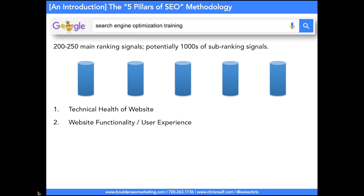Let's talk about pillar number two: the functionality of your website, also known as the user experience. If your website doesn't function in a way that makes it easy for people to find what they're looking for — consuming pages, jumping from one page to another in a way that makes sense — you will actually get downgraded. Google made it very clear: if your visitor doesn't have a great user experience, you may get downgraded in Google search.